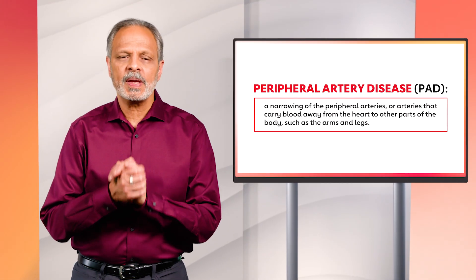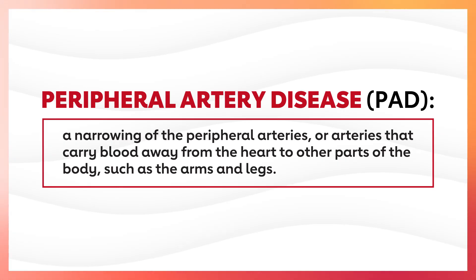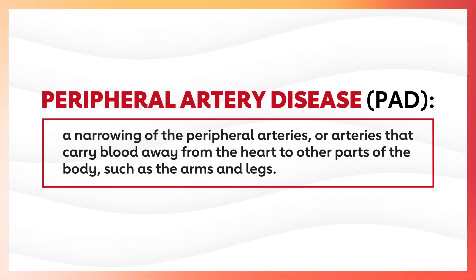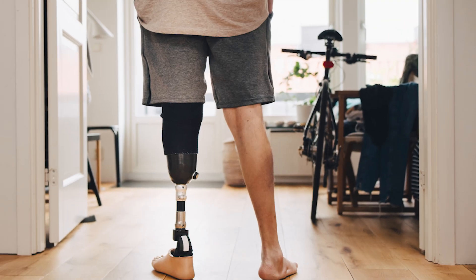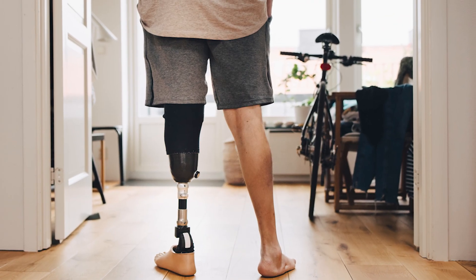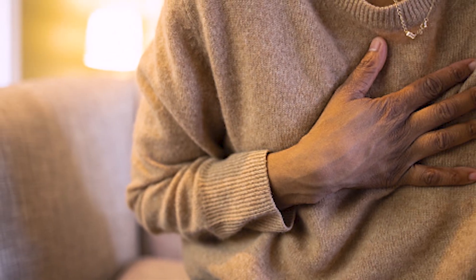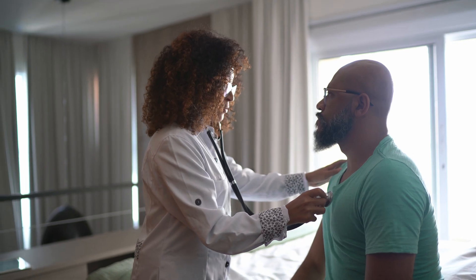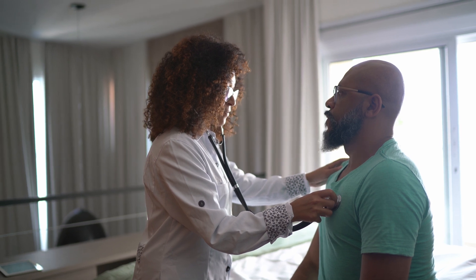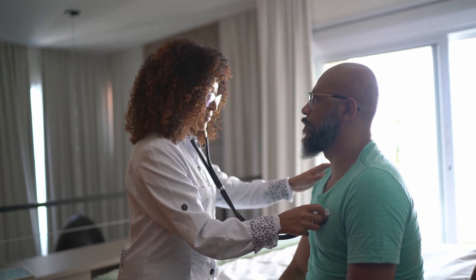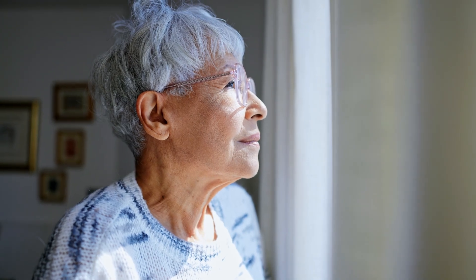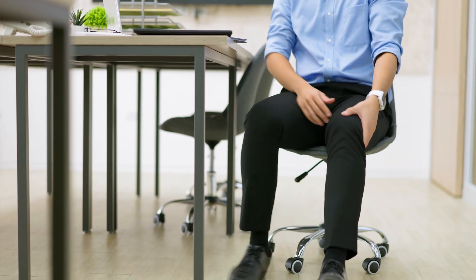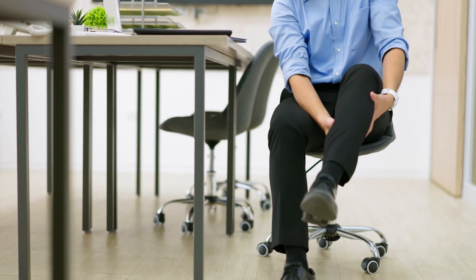Peripheral artery disease or PAD is a narrowing of the peripheral arteries — arteries that carry blood away from the heart to other parts of the body such as the arms and legs. PAD can lead to gangrene and amputation, and people with PAD have a higher risk of coronary artery disease, heart attack, and stroke. Unfortunately, PAD often goes undiagnosed by healthcare professionals. So how do you know if you are at risk for PAD, and if you are diagnosed with PAD, what can you do about it?